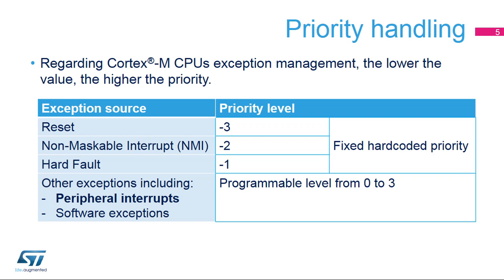Software is in charge of assigning a priority level to each interrupt, as well as to all exception sources, not including reset, NMI, and hard fault. Whenever a peripheral interrupt is requested at the same time as a supervisor call instruction is executed, the relative priority of these hardware and software exceptions will dictate which one will be taken first.